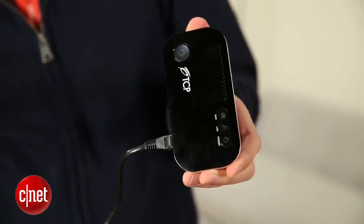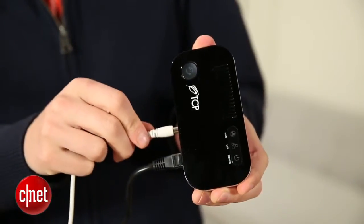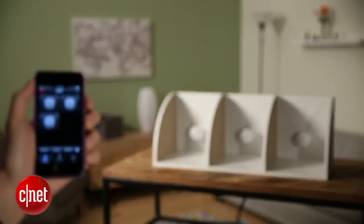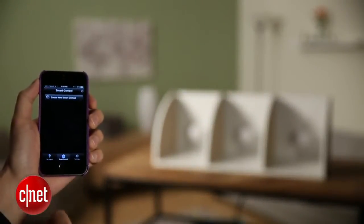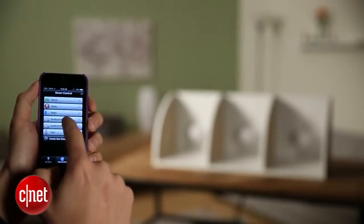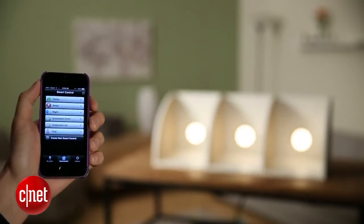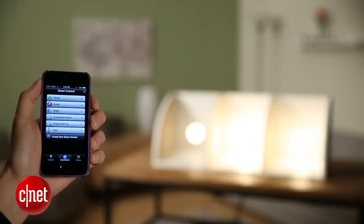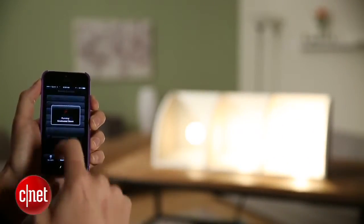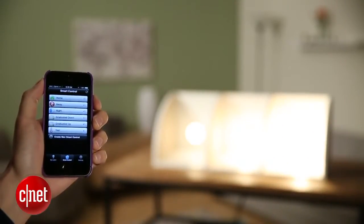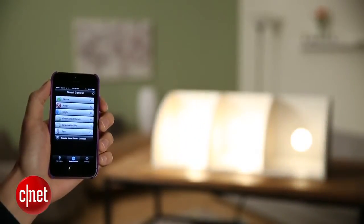Once you set these bulbs up and plug the hub into your router you'll be able to download the free TCP app for your Android or iOS device. Using that app you'll be able to control the bulbs from your phone or your tablet and that includes dimming them, automating them, so if you want them to turn on in the morning and turn off at night, whatever you need you can set that up and it's a great app. It works well, it's very intuitive, I liked it.